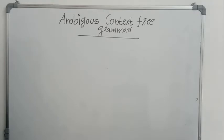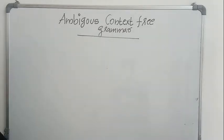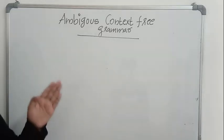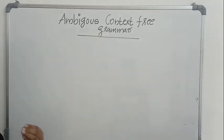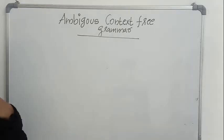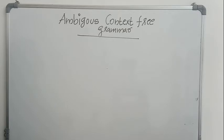Hello. In this video we will see the ambiguity in context-free grammars. Simply speaking, an ambiguous grammar is the one which produces more than one leftmost derivation or more than one rightmost derivation for producing the same sentence using a grammar. Keep in mind that one leftmost derivation and one rightmost derivation is not a sufficient condition for ambiguity — it should have at least two leftmost derivations or at least two rightmost derivations to be called an ambiguous grammar for producing the same sentence.